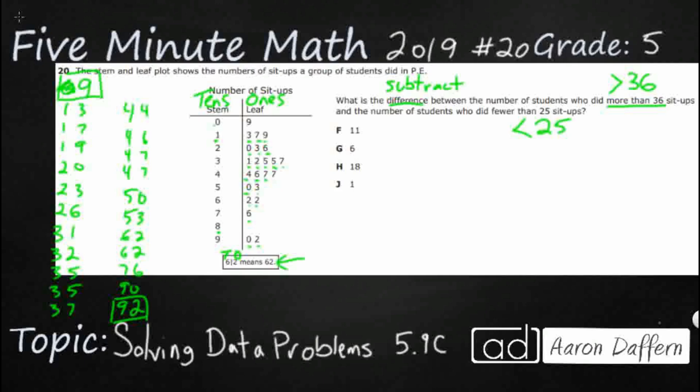So, who did more than 36? So, 36 would go right here. So, I've got all of these numbers right here. And I'm going to include that 37. So, I've got 1, 2, 3, 4, 5, 6, 7, 8, 9, 10, 11, 12. So, I've got 12 students that did more than 36. And if I wanted to do that just on the graph itself, I could have done it right here.